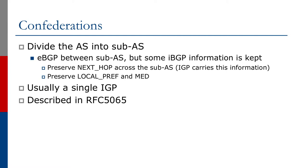What a confederation is, is really taking the local autonomous system and dividing it into several sub-autonomous systems. We still have EBGP working between the local AS and the rest of the Internet, but we now also have EBGP between these sub-autonomous systems. However, that EBGP has some IBGP behaviors, and of course IBGP information is also kept as well.